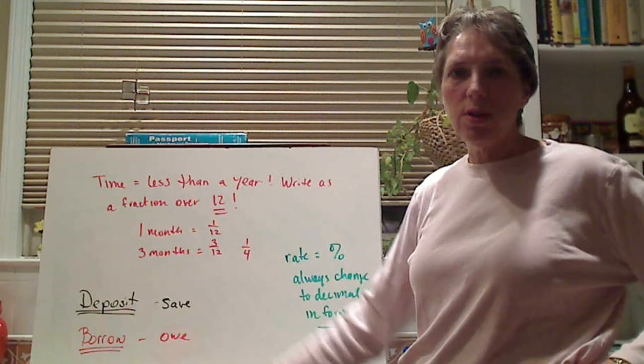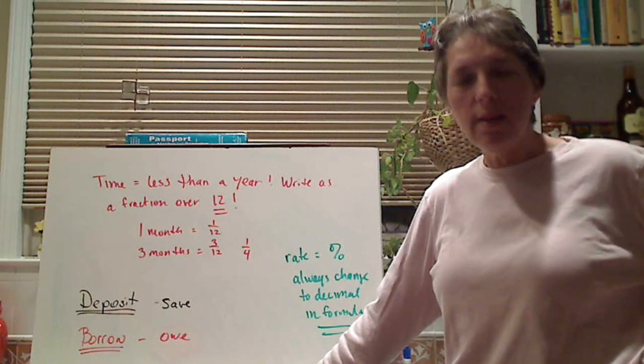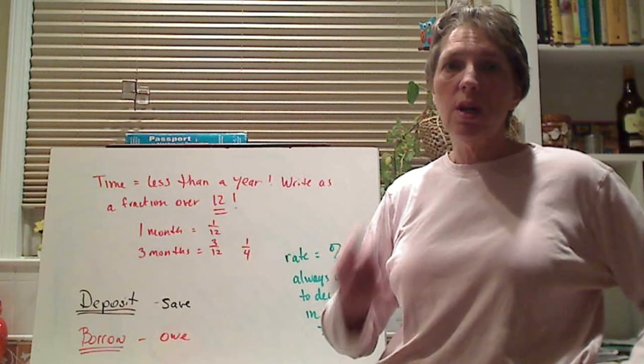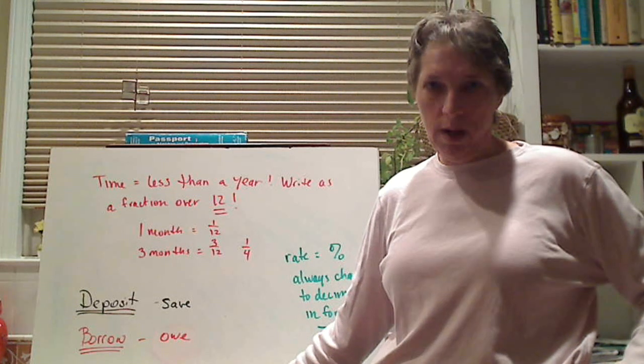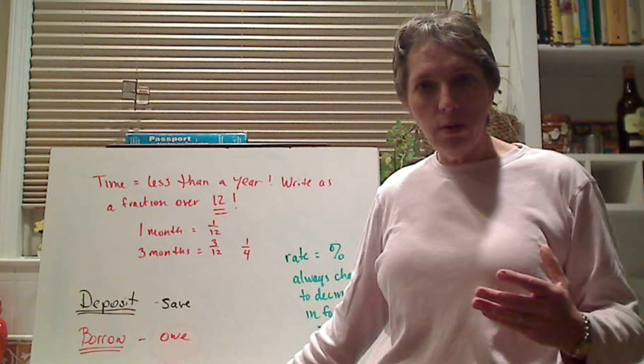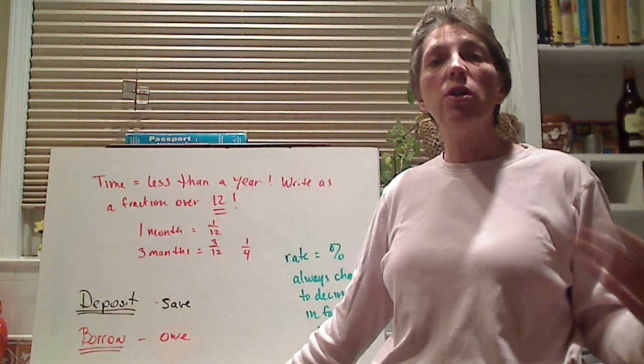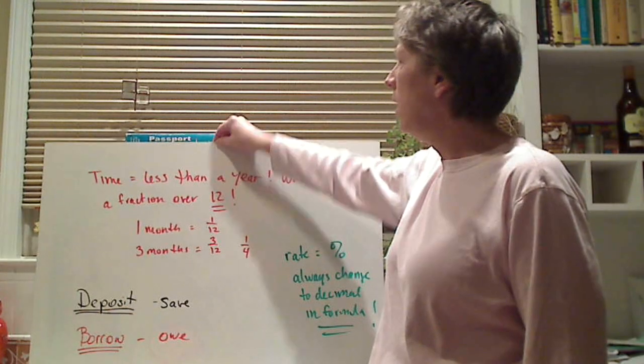Now there's two key words here. There's deposit. Whenever they tell you, you're going to deposit the money, that means you're saving money. You're putting it into the bank. You want it to earn interest so you make money. Borrow is when you owe money. You borrow the principal amount of money that you're going to have to pay back and they're going to charge you a fee. And the fee is the interest.